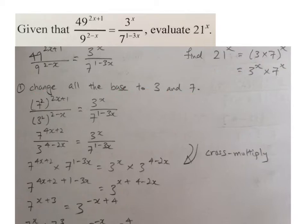The first step is to always change all the base to 3 and 7. For this case, I have to change 49 to be 7 squared, 9 to be 3 squared. So then I use my law of indices, I can multiply my power over here. So I get 4x plus 2, and at the bottom I get 4 minus 2x.